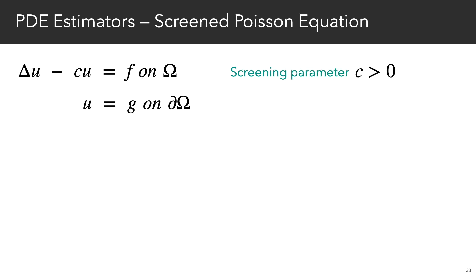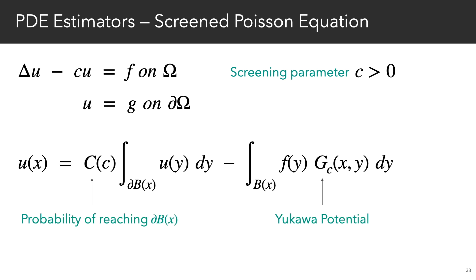Another equation common in geometry processing is the screened Poisson equation, which is used for surface filtering and computing geodesic distances. Now, unlike the Poisson equation, this equation has a mean value relationship which uses the so-called Yukawa potential, and it weights the boundary integral by a constant that depends on the screening parameter.